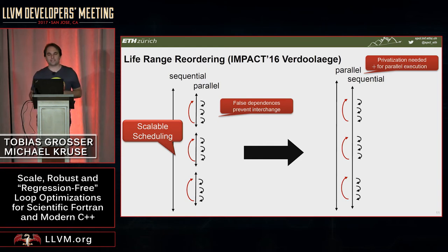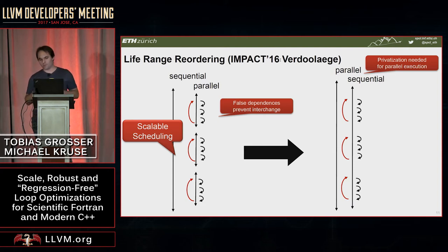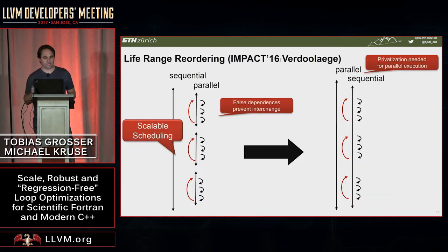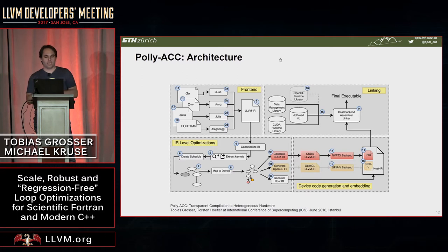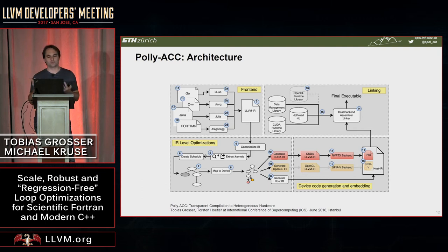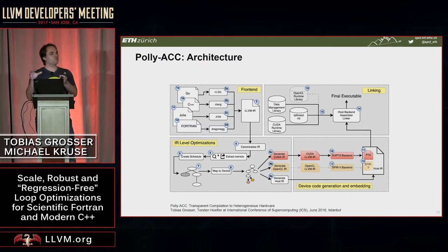If you're interested in the details of how the data dependencies work, there's a full IMPACT paper about modeling such complex loop transformations. What we did — in a one or two year project — is use this after the loop interchange to build a full pipeline. Starting with Fortran and going through LLVM, it builds a high-level representation of the loop program, does all the transformations, generates CUDA code, embeds it into the binary, and produces a single unified binary that runs a certain percentage of the program on the GPU.